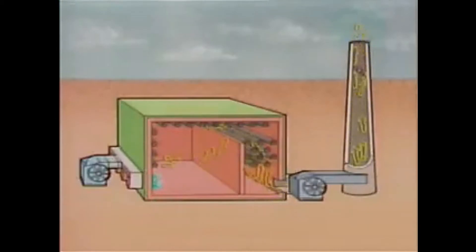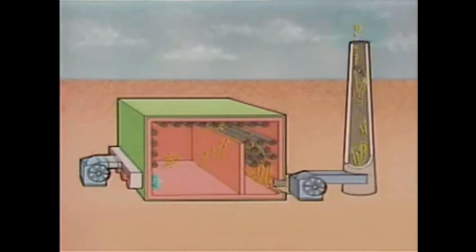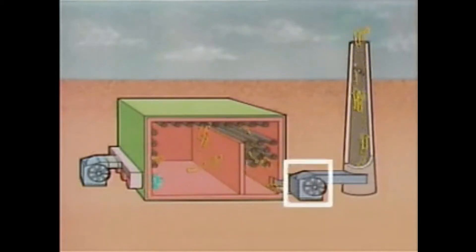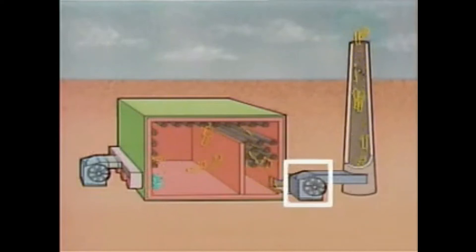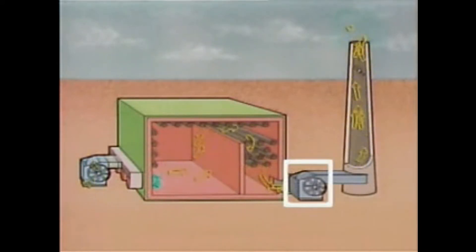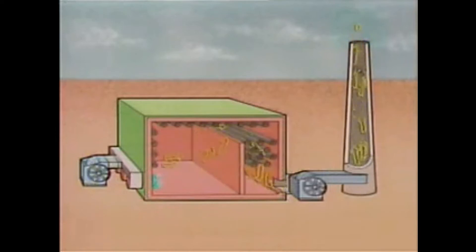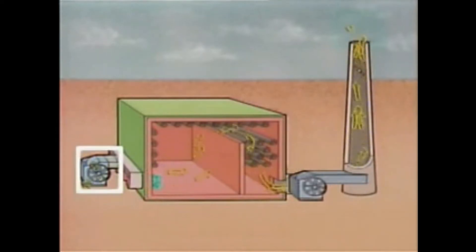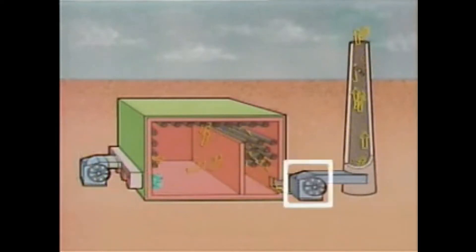Another type of furnace is a balanced draft furnace. A balanced draft furnace is similar to a force draft furnace, but it has another fan in addition to the force draft fan. The second fan is called an induced draft fan, and it is located in the flow path of the combustion gases between the furnace and the stack. So in a balanced draft furnace, one fan provides air for the burners and the other fan removes the combustion gases.